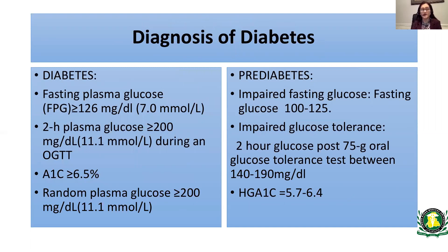How do we diagnose diabetes? There are several different ways. It can be diagnosed with fasting plasma glucose — a fasting plasma glucose of more than 126 is consistent with diabetes. A 2-hour plasma glucose of more than 200 after a 75-gram glucose load is also consistent with diabetes. Hemoglobin A1c — which is like an average of your glucose over three months — of 6.5% or more is consistent with diabetes. And a random glucose of more than 200 is also consistent with diabetes.